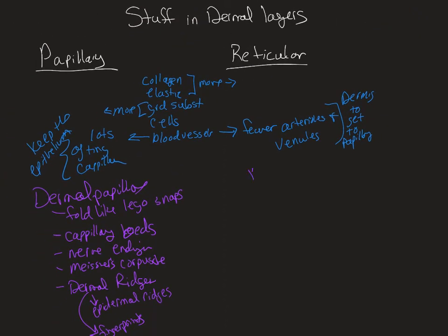In the reticular region, two special features: cleavage lines and flexure lines. Cleavage lines are important in surgery — like the selvage in sewing, cutting with the line allows the skin to come together neatly. Going against it gives you gappy, rippled results. Flexure lines are the folds around your joints which allow you to bend without ripping your skin. For burn injury patients, scar tissue can eliminate flexure lines and impair joint movement.